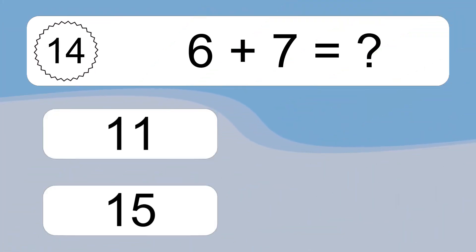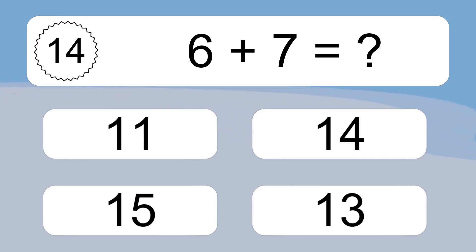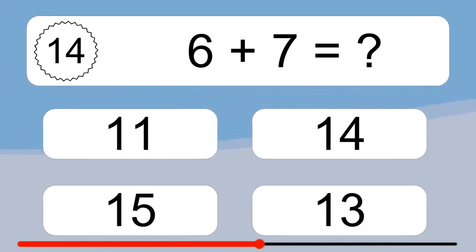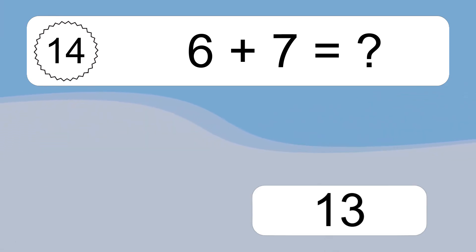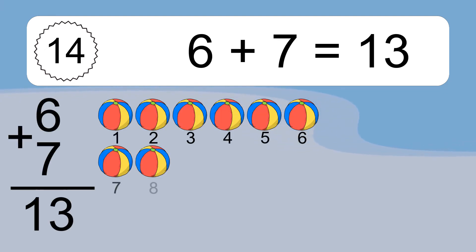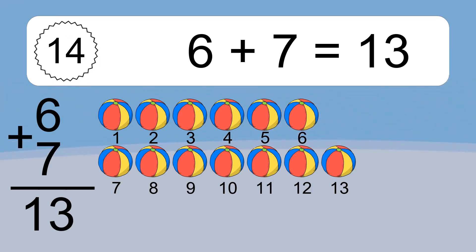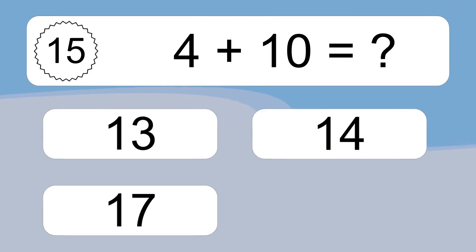6 plus 7 equals what? 6 plus 7 equals 13. Let's count it. 1, 2, 3, 4, 5, 6, 7, 8, 9, 10, 11, 12, 13.